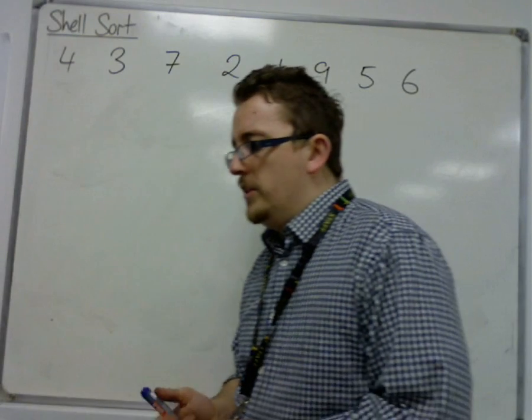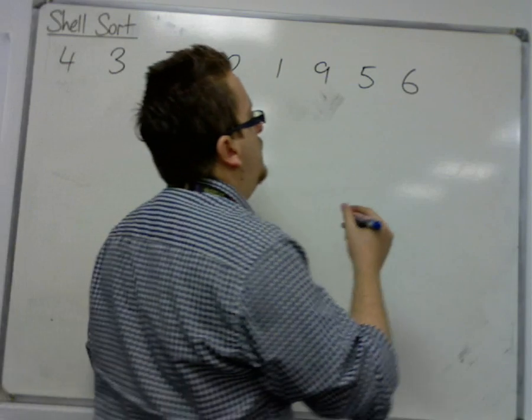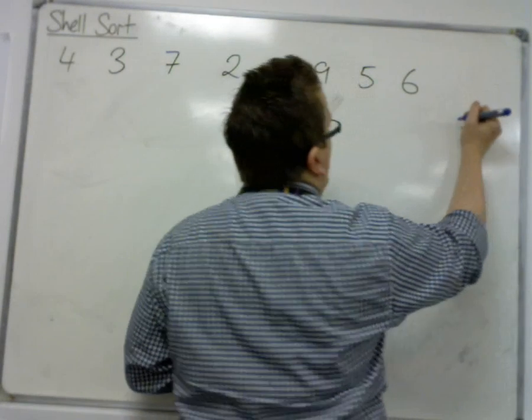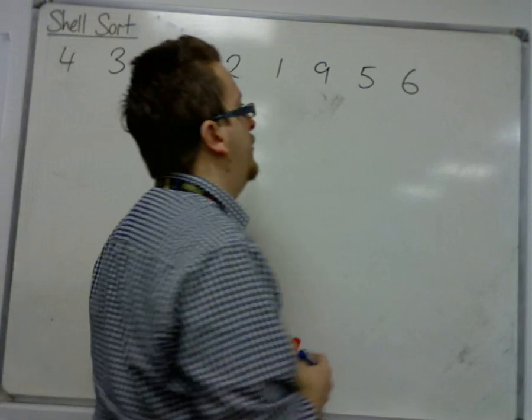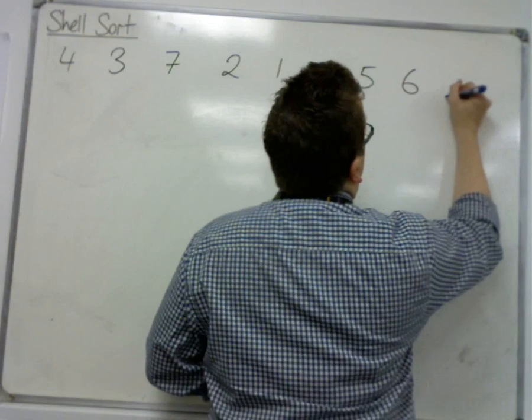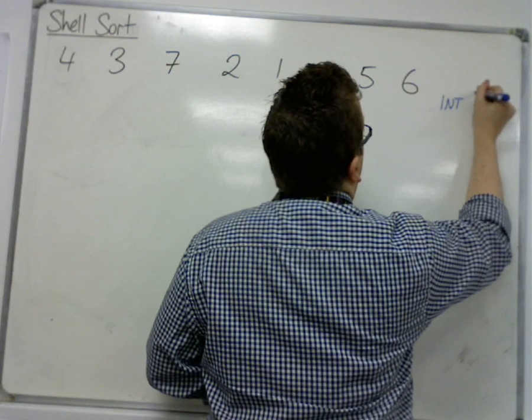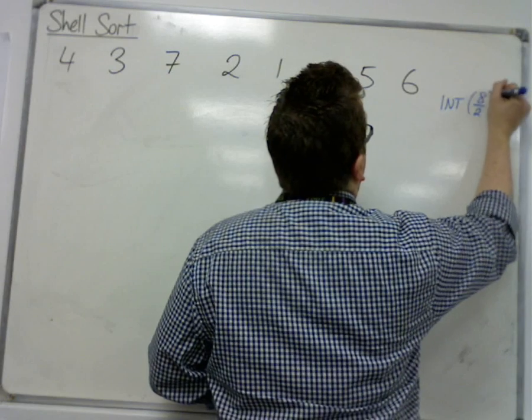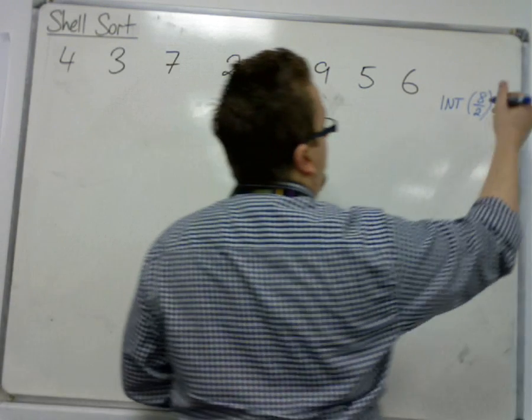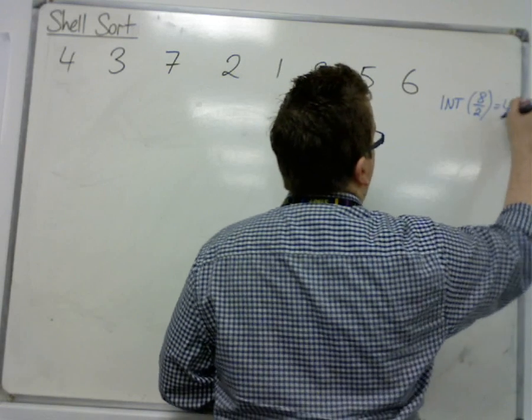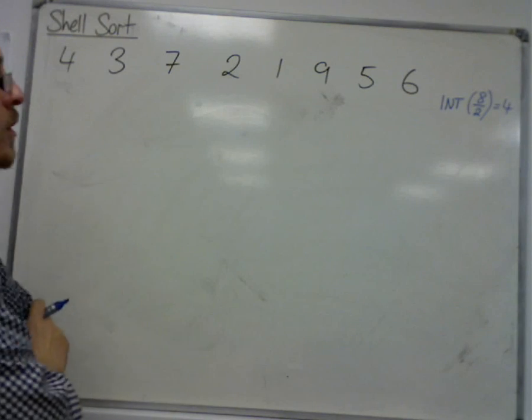So the first thing we do is we look at how many numbers we have, we've got 8, and we are trying to figure out how many groups to set them up in, how many sublists to sort. So first of all, we take the integer part of 8 divided by 2, the amount of numbers divided by 2. Now 8 divided by 2 is 4, so the integer part of 4 is 4, so there's not anything complicated there.